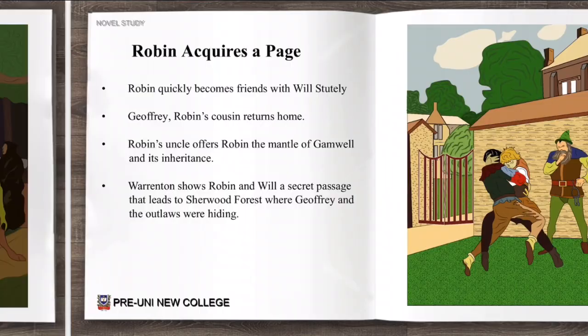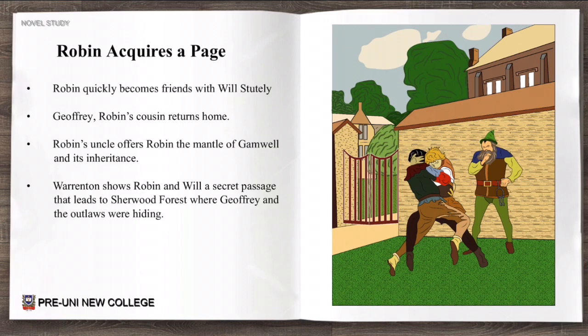Next chapter: Robin acquires a page. Robin quickly becomes friends with Will Stootly. Geoffrey, Robin's cousin, returns home. Robin's uncle offers Robin the mantle of Gamwell and its inheritance. And Warrington shows Robin and Will a secret passage that leads to Sherwood Forest, where Geoffrey and the outlaws were hiding.